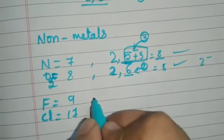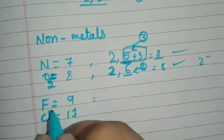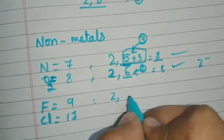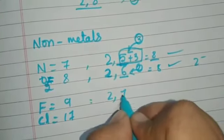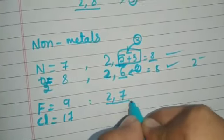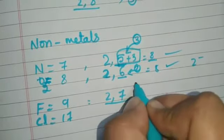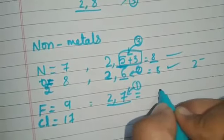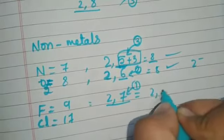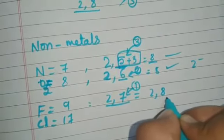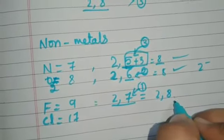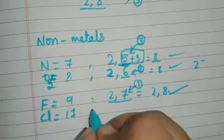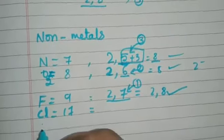If you take fluorine, its atomic number is 9, configuration is 2 and 7. It requires one more electron to complete the octet structure — one more electron gives 2 and 8, which is completely filled.